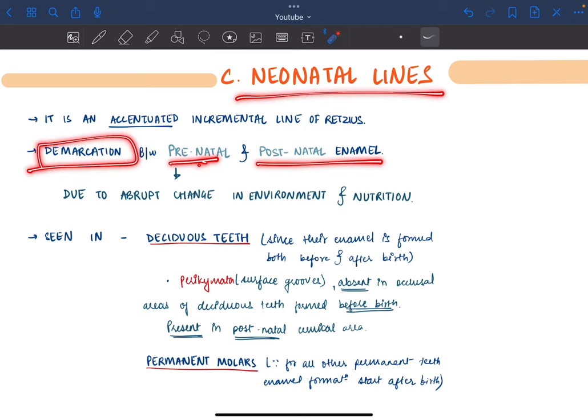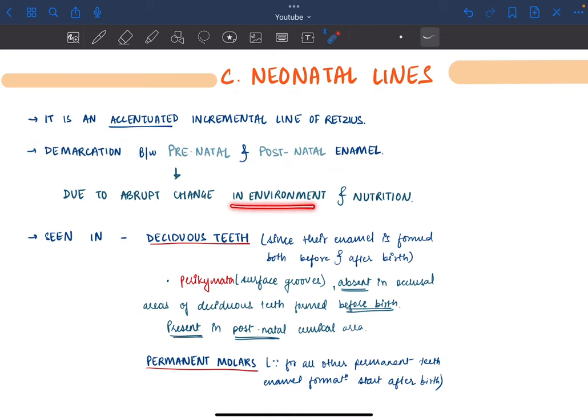The neonatal line happens due to changes in environment and nutrition. Neonatal lines are seen in deciduous teeth because their enamel formation takes place both before and after birth. For permanent teeth, it is seen only in molars, since for all other permanent teeth enamel formation takes place after birth.